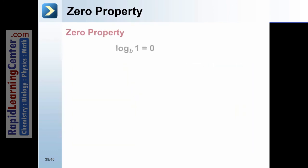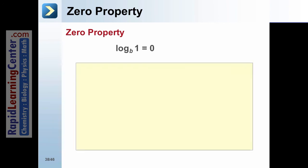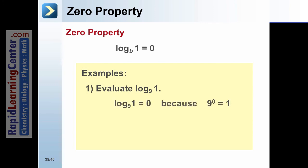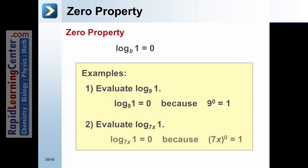Zero Property of Logarithms: Log base b of 1 equals 0. Example 1: Evaluate log base 9 of 1 — log base 9 of 1 equals 0 because 9 is the base and the answer is 1, so the exponent must be 0. Log base 7x of 1 equals 0 because if 7x is the base and the answer is 1, the exponent must be 0.